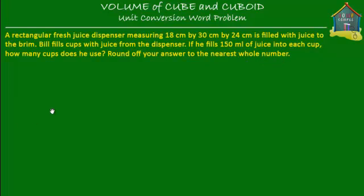Here is what we have. We have a rectangular fresh juice dispenser that has got its length as 18 centimeters, breadth as 30 centimeters, and height as 24 centimeters. Now these are interchangeable — you can say that 18 is the height and 30 is the length, but it doesn't really matter. The volume still remains the same.